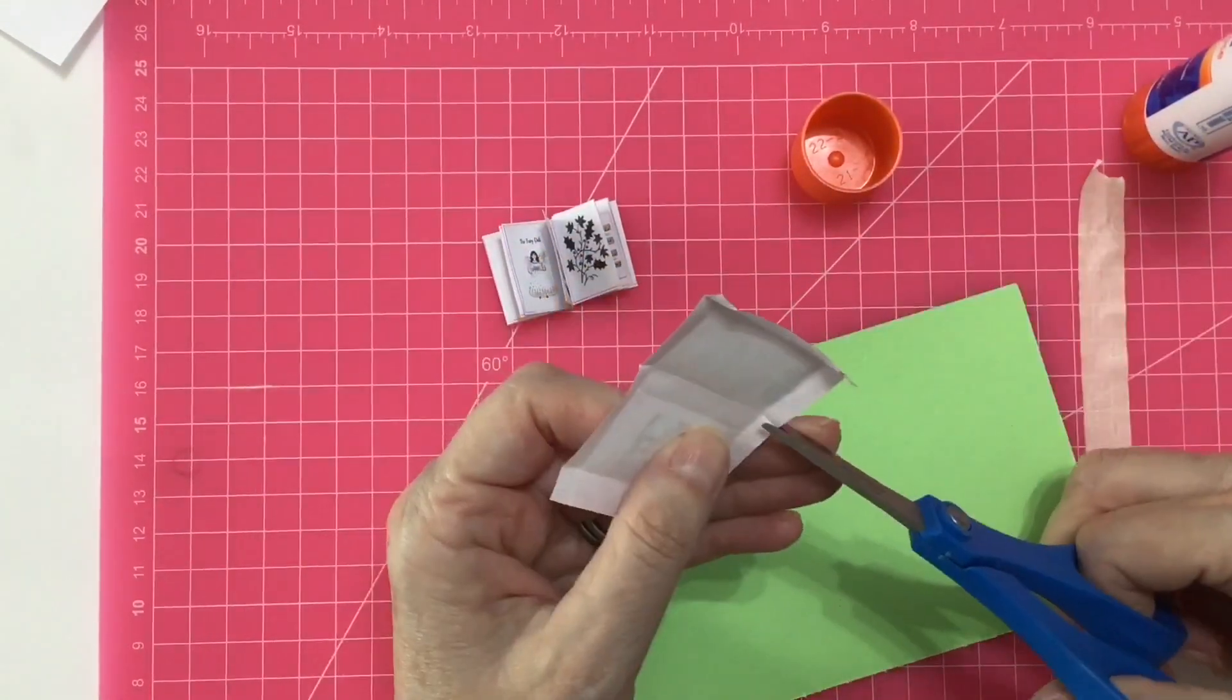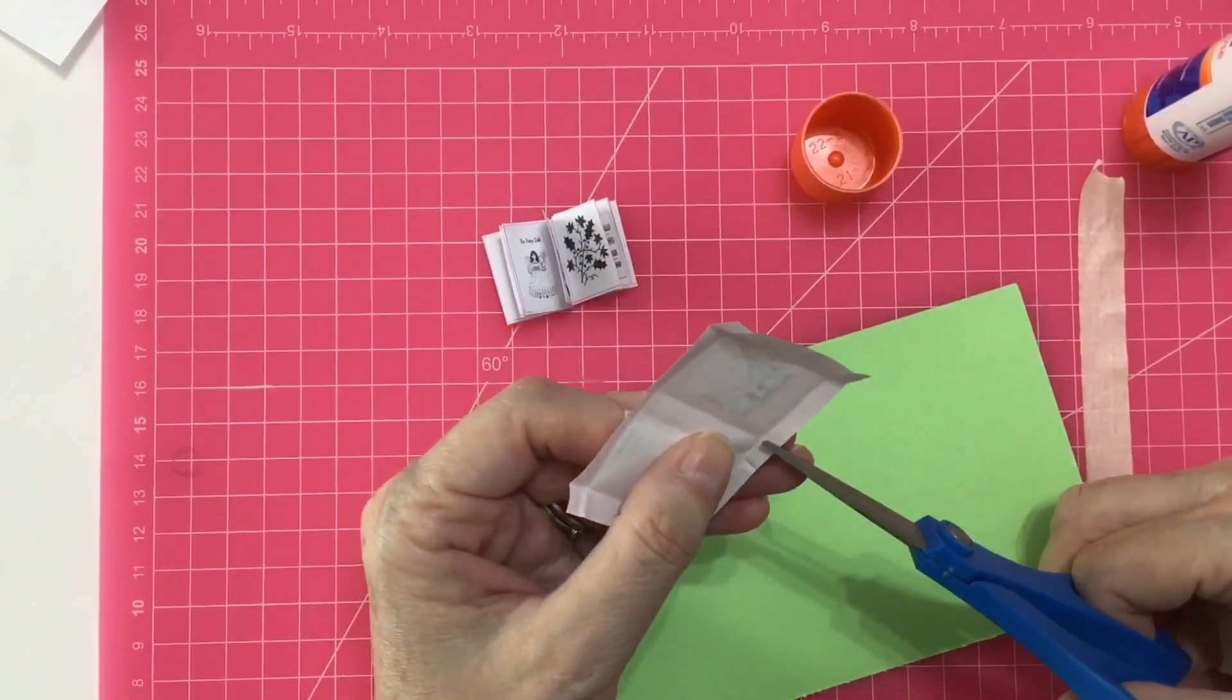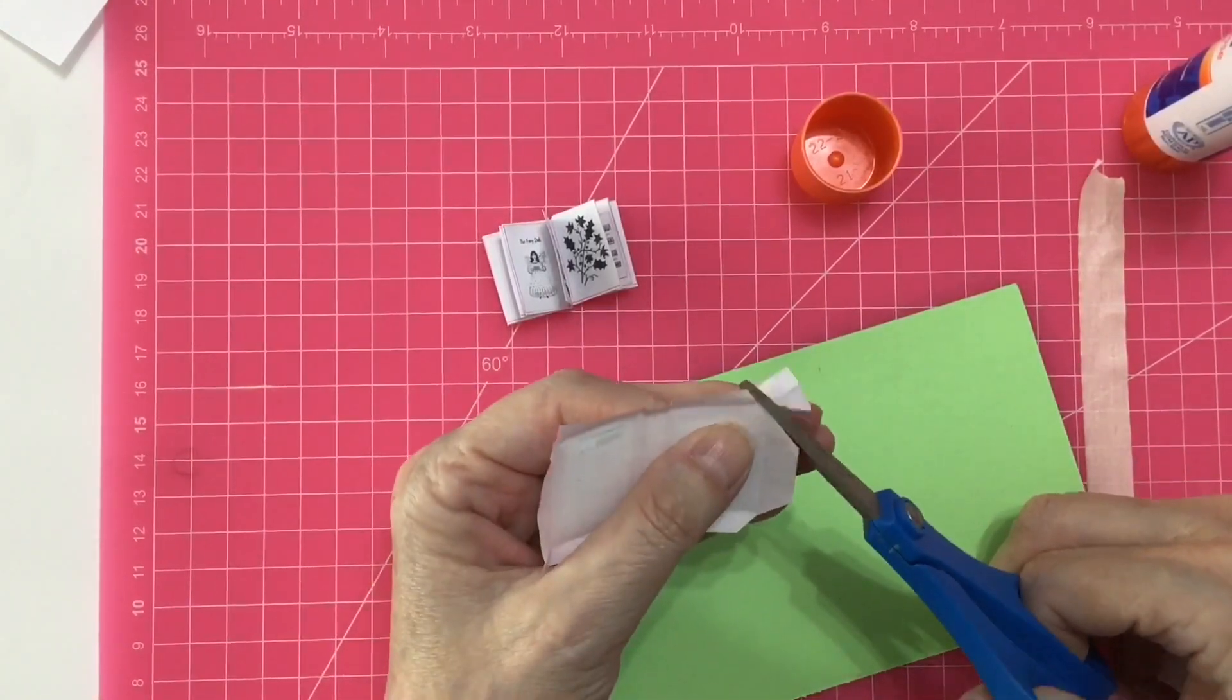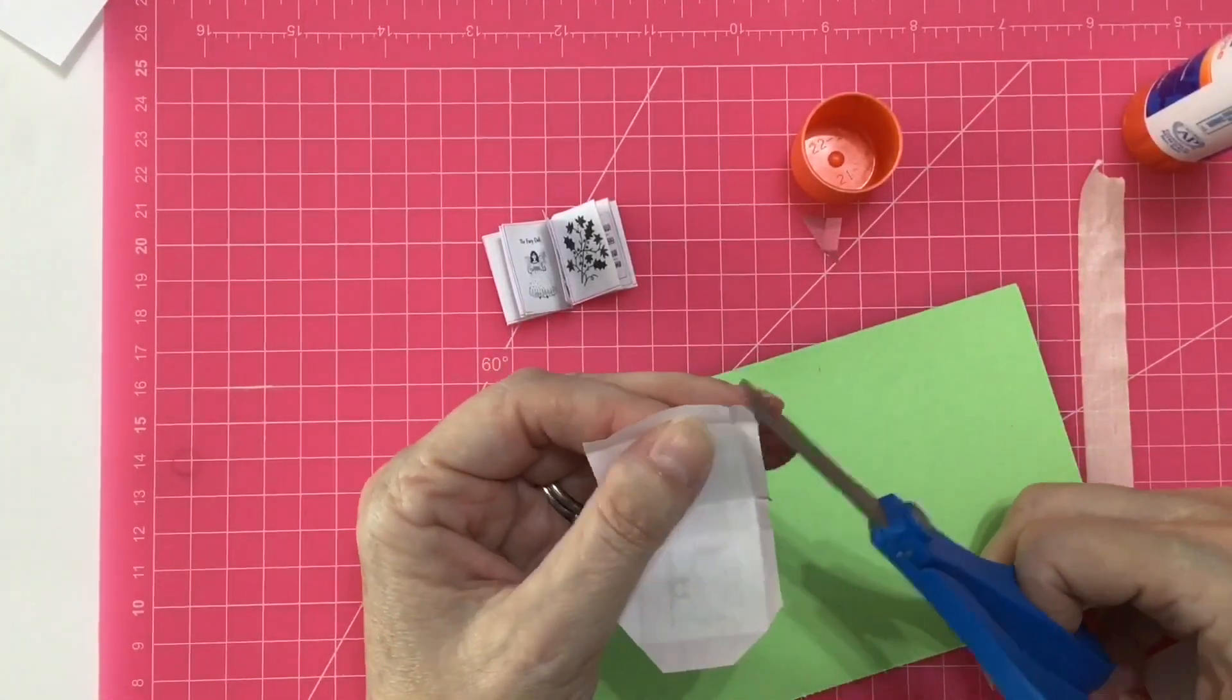Once you have all of your fold edges, you want to snip the top and bottom of the spine and then miter the corners.